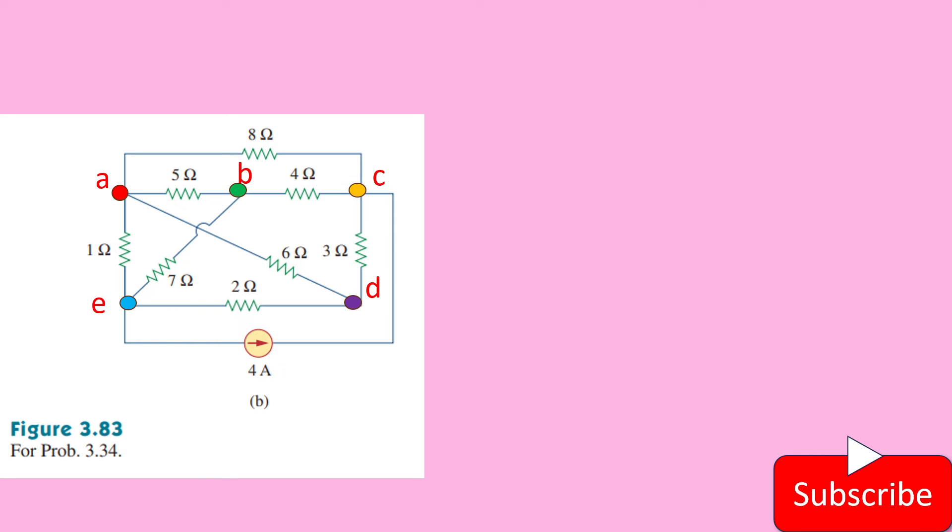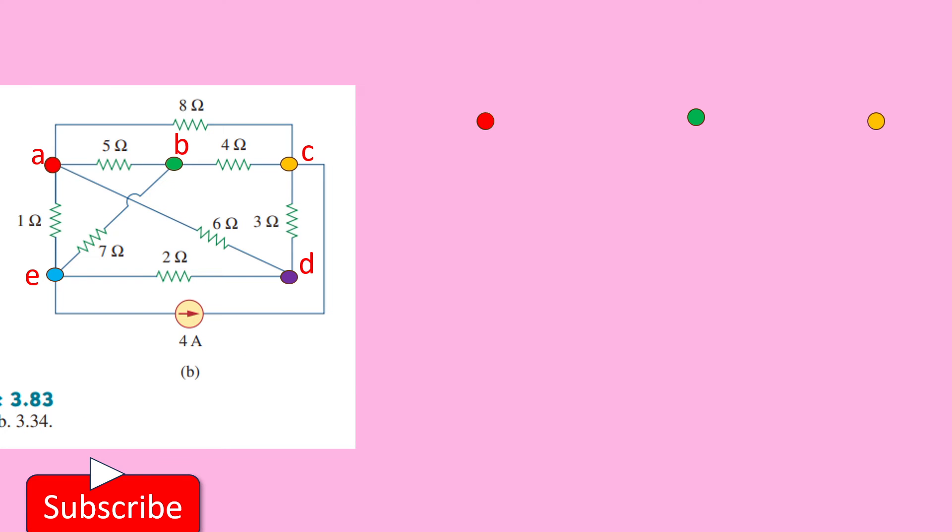So if we make some modification in this circuit, we can make it as a planar. Let's see. So we mark the nodes here A, B, C, D, E.